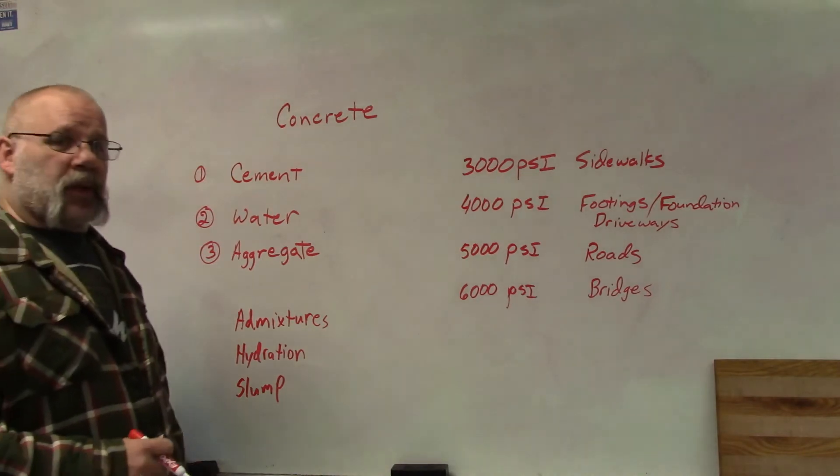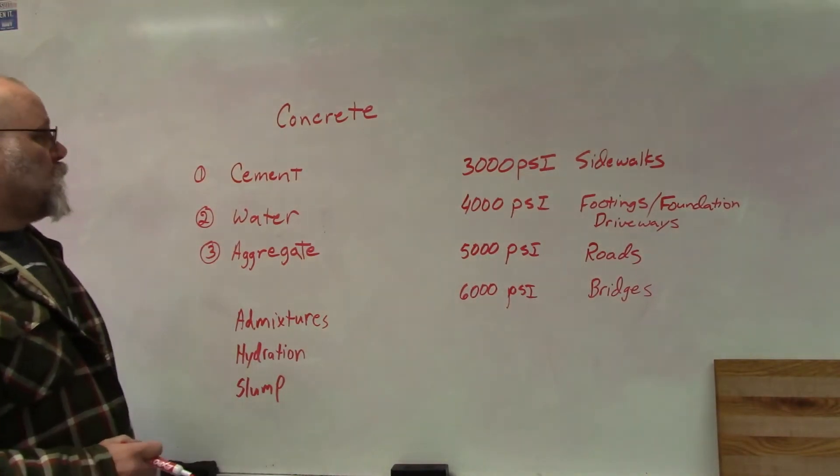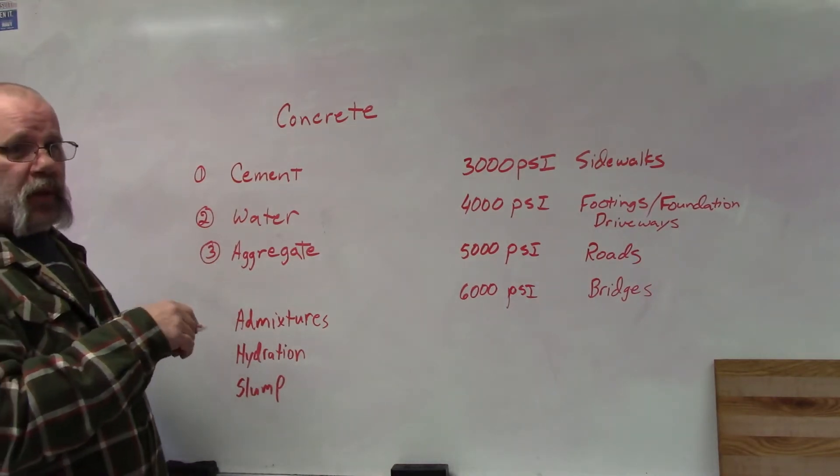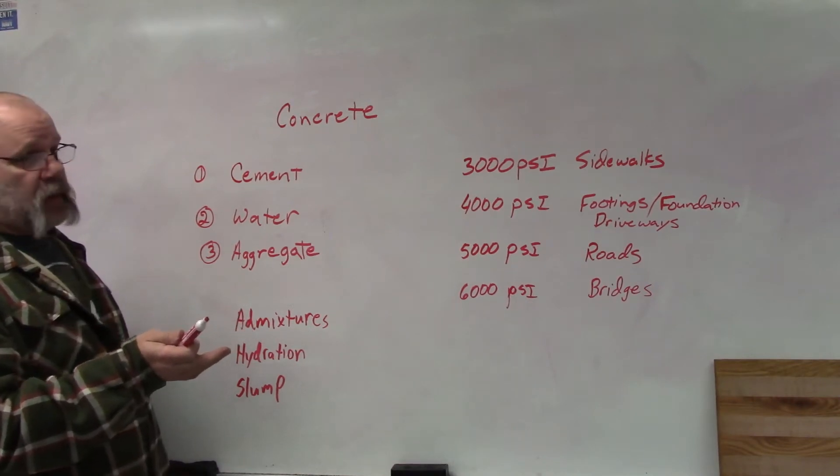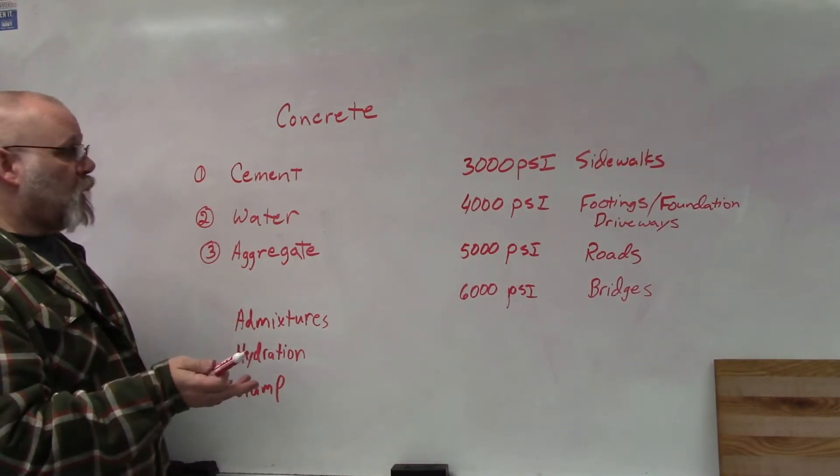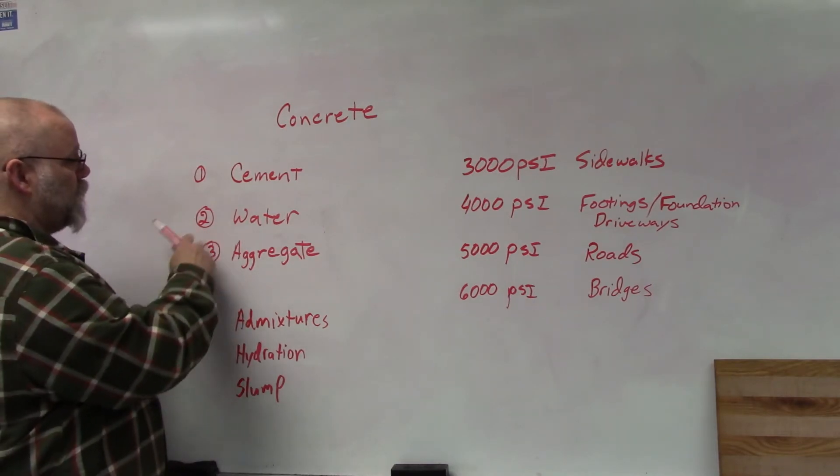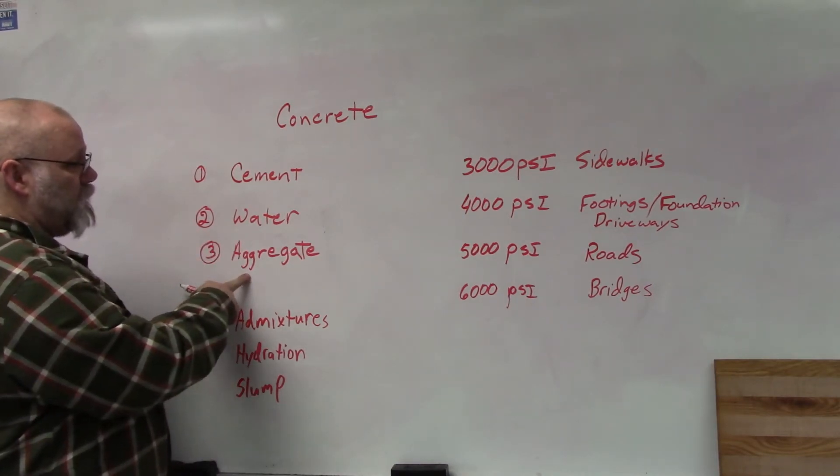Okay, let's talk about concrete. Concrete is made up of three basic materials. Number one is cement - cement is that fine gray powder that they put in there to make it. It's got the chemicals in it that will harden with the addition of water, that will be number two. And then the third one is aggregate.